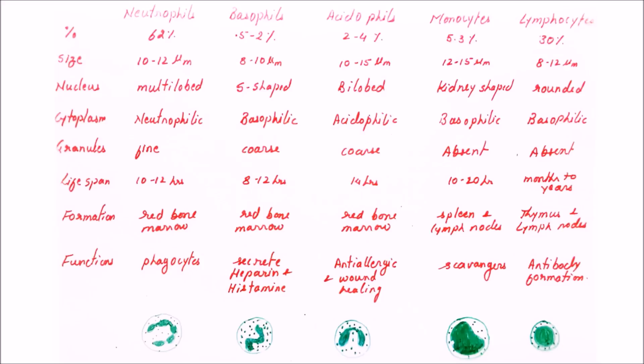Now coming to the granules: acidophils, basophils, and neutrophils are granulocytes, whereas monocytes and lymphocytes are agranulocytes. If we compare them on granules, neutrophils have fine granules, basophils and acidophils have coarse granules—that means the granules are slightly bigger—whereas in monocytes and lymphocytes, these granules are absent.